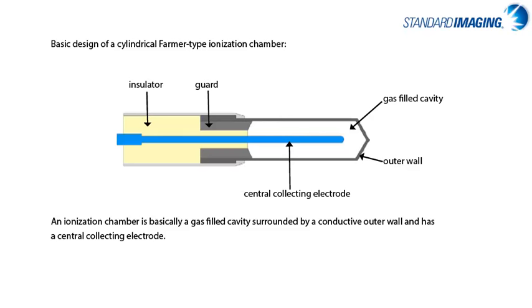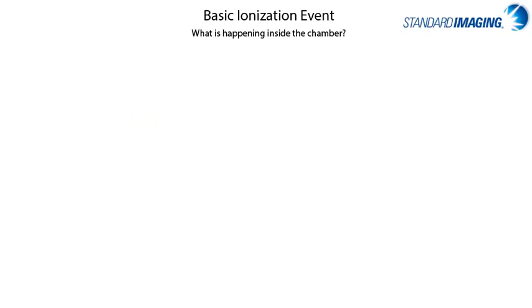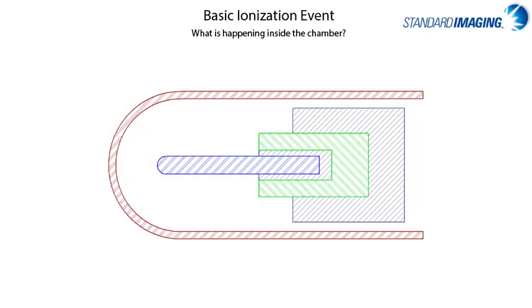A voltage is applied to the chamber, and most chambers today apply a bias to the central electrode, leaving the outer wall at ground to avoid shock hazards. If we consider a biased, air-filled ionization chamber, we can delve into what happens when it is placed in a beam of ionizing radiation.